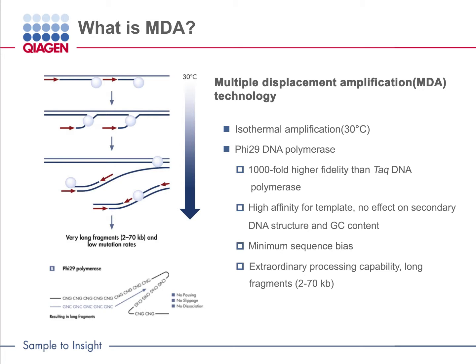Multiple displacement amplification, MDA, is an isothermal amplification process where the amplification is carried out at 30 degrees Celsius. The low temperature helps to keep the tiny starting material intact and reduces DNA template damage.